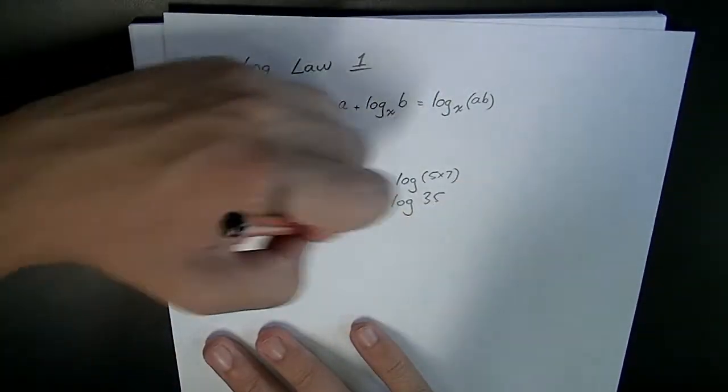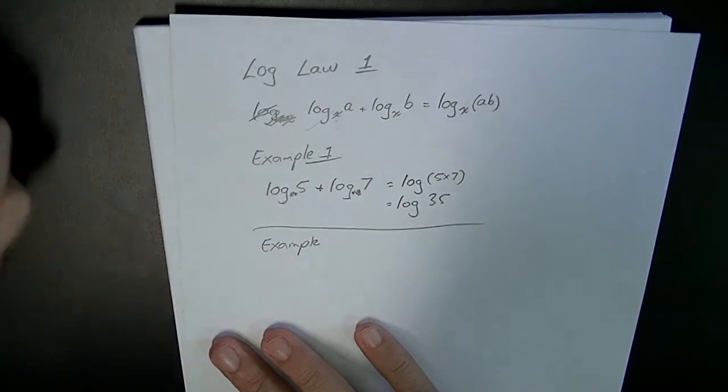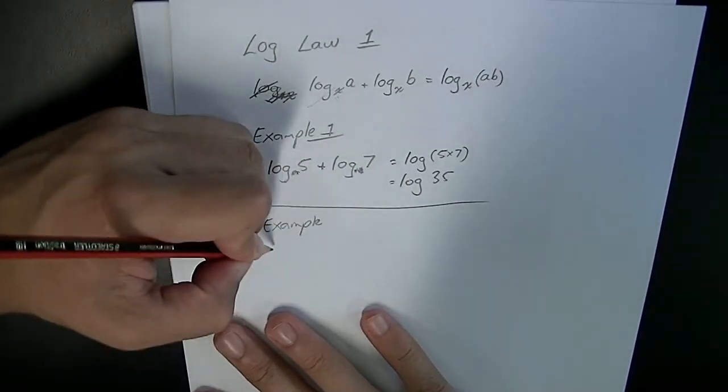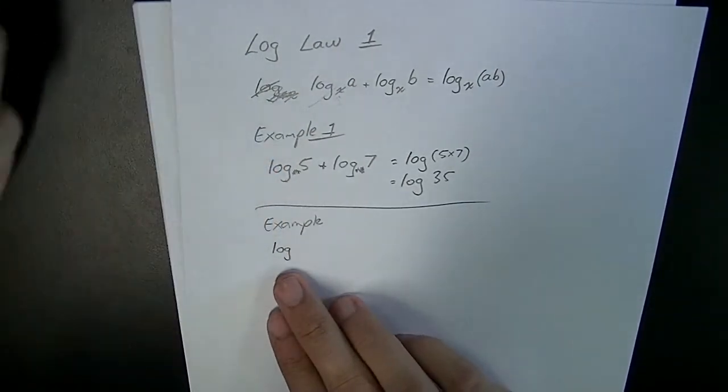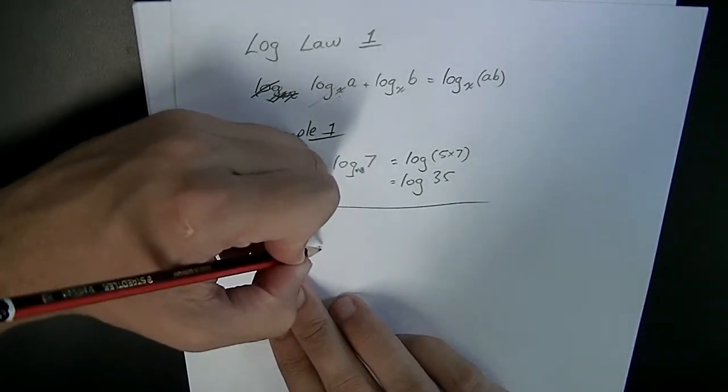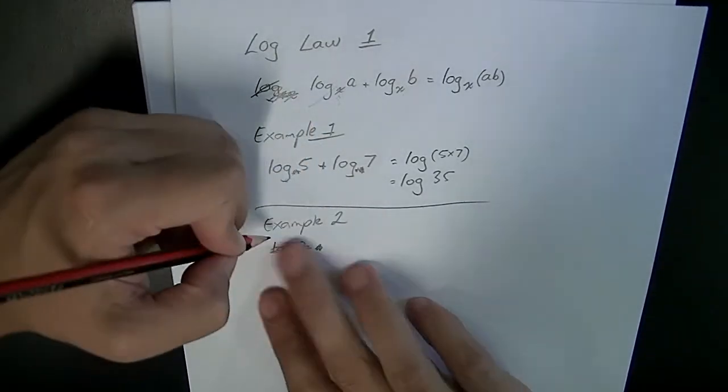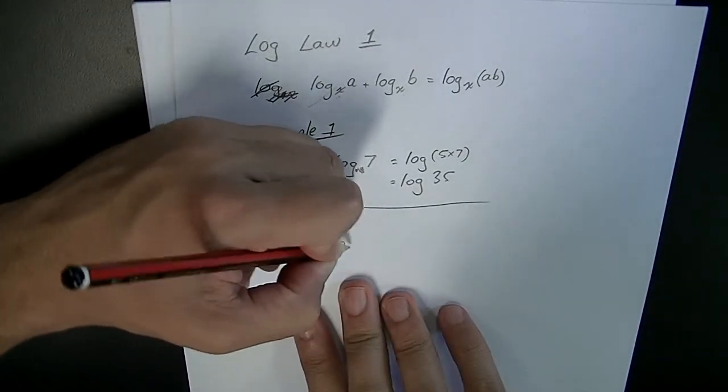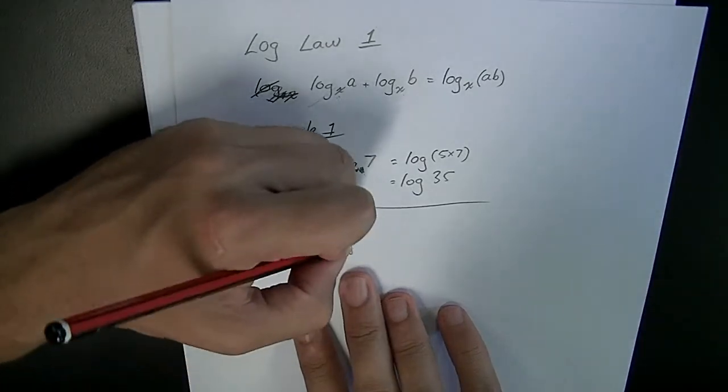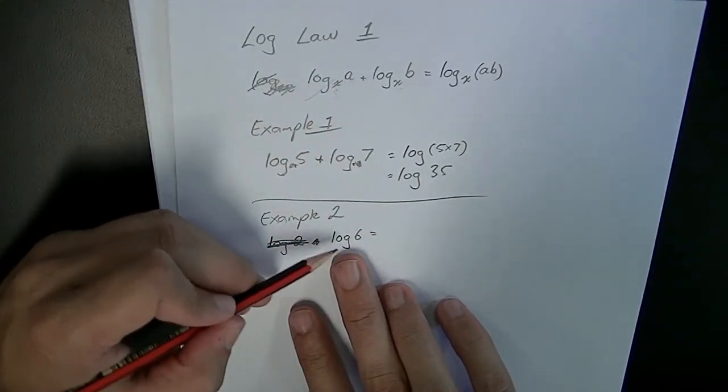Now a second example that you might get with this rule is to do those things in opposite. Example 2: let's say log 6. If you wanted to expand that for some reason.